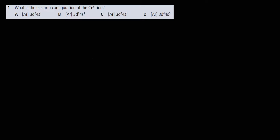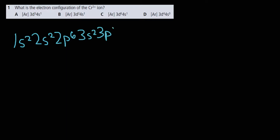What is the electron configuration of the chromium 2+ ion? Chromium is a special case in terms of its electron configuration because it has a configuration that is different from what might be intuitive, but makes sense in terms of stability. Let's first write out the electron configuration for chromium, which has atomic number 24, so we'll want 24 electrons: 1s2 2s2 2p6 3s2 3p6 4s2.